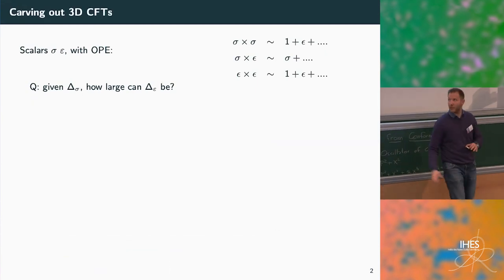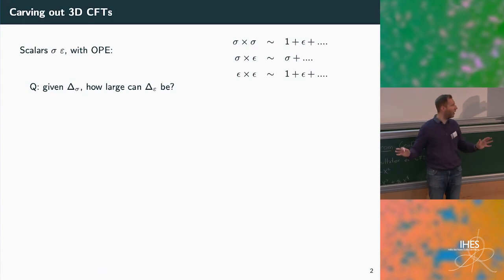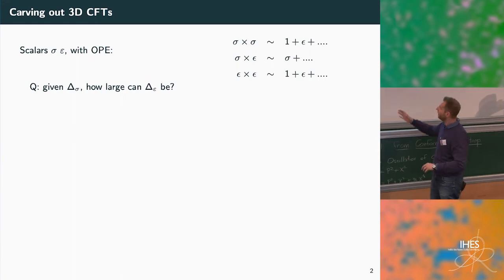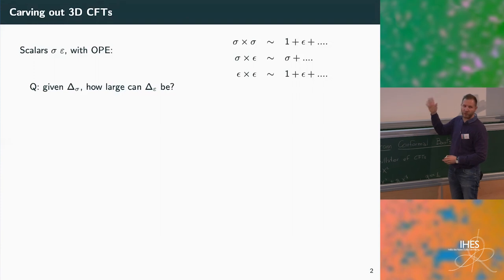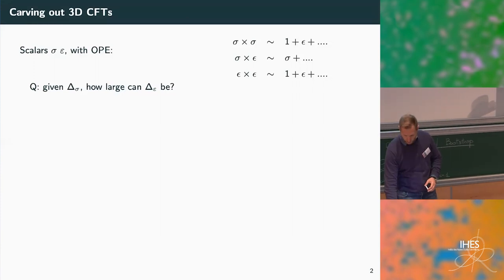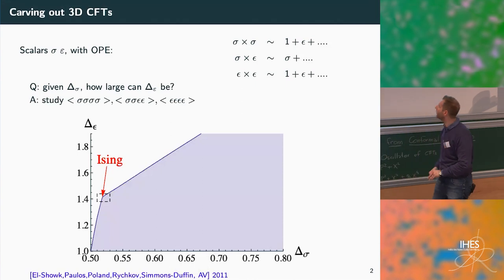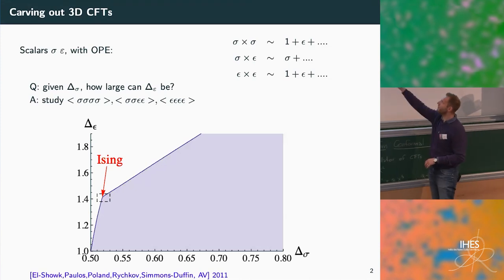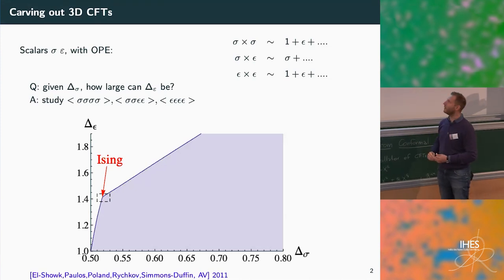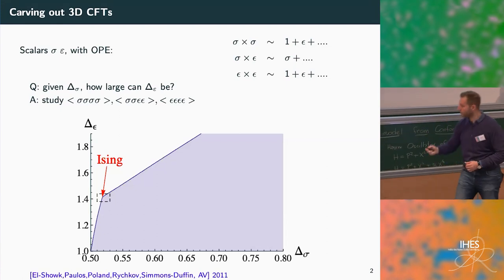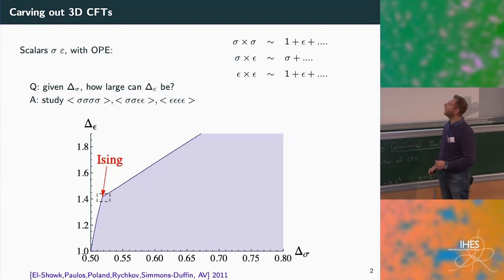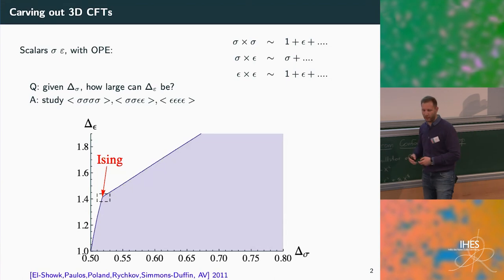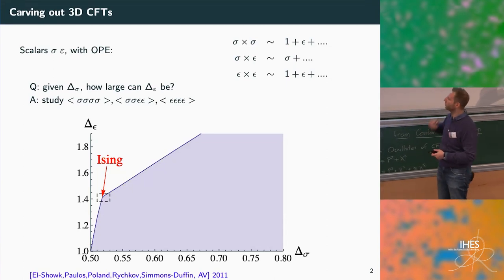Let's play the same game in three dimensions. The only change is basically the form of the conformal block. Again, there is an allowed region and an excluded region, and there is a kink-like shape which signals the presence of something special. Comparing this kink with the expected critical exponents of the Ising model, one finds that it matches quite well within the approximation of this plot.